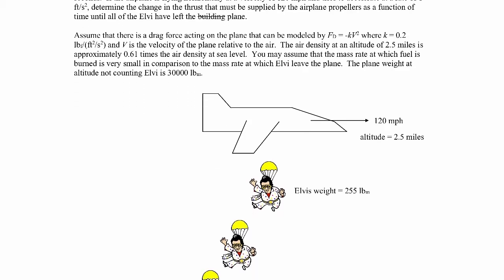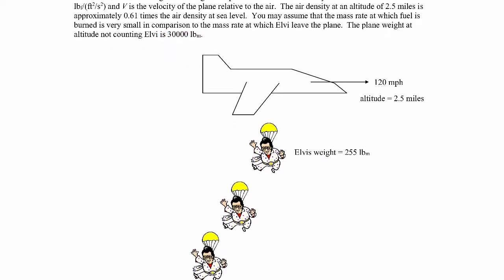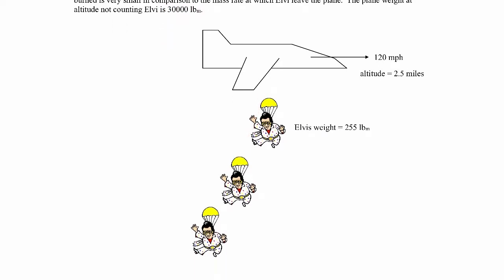The plane weight at altitude, not counting Elvi, is 30,000 pounds mass. So we have all these Elvi jumping out of the plane. We're trying to find the additional thrust we have to apply to the plane in order for it to accelerate. This is a linear momentum problem because we're trying to find an acceleration of the aircraft.